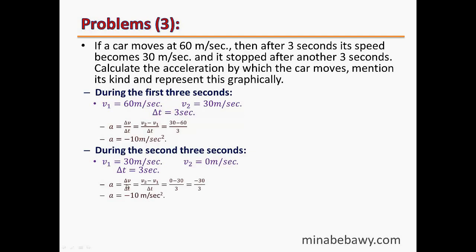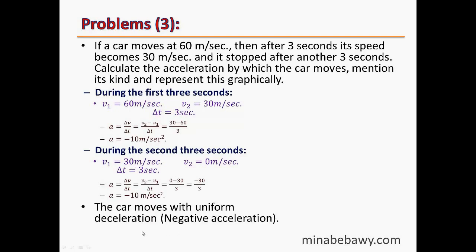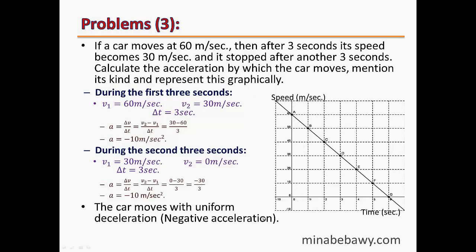The final request is to represent this graphically. On the y-axis we place speed in m/s and on the x-axis time in seconds. At time equals 0, speed was 60 m/s. After 3 seconds the speed decreased to 30 m/s. After 6 seconds the car stops and speed equals 0. Joining these three points gives a straight line showing that as time increases, speed decreases — indicating negative acceleration.